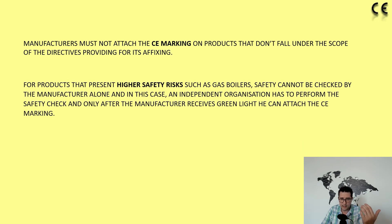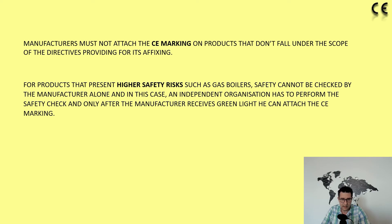Manufacturers must not attach a CE marking on products that do not fall under the scope of the directives providing for its use. For products that represent higher safety risks — such as gas boilers — safety cannot be checked by the manufacturer alone. In this case, an independent organization, which most of the time is a national organization, has to perform the safety check, and only after the manufacturer receives the green light can they attach the CE marking.